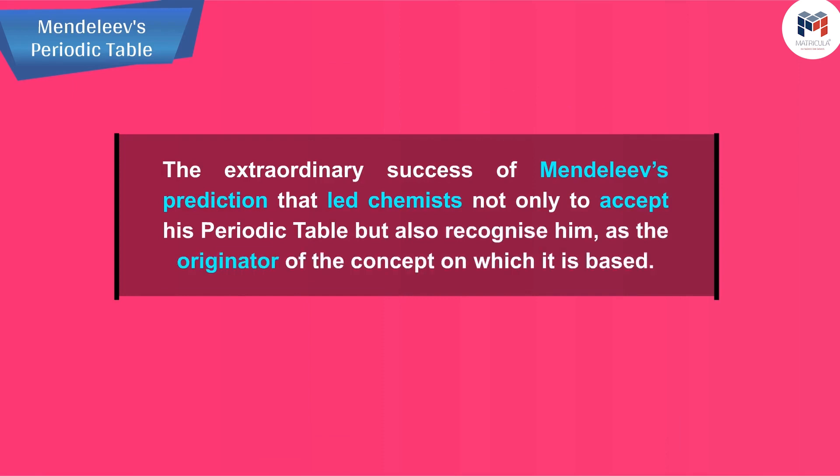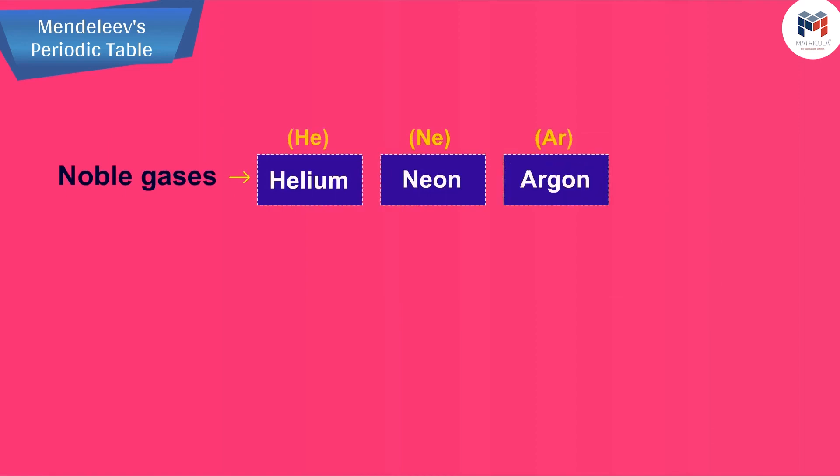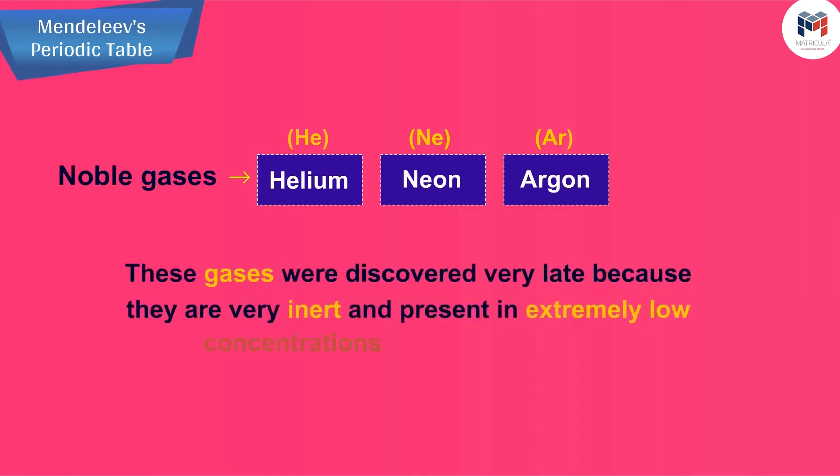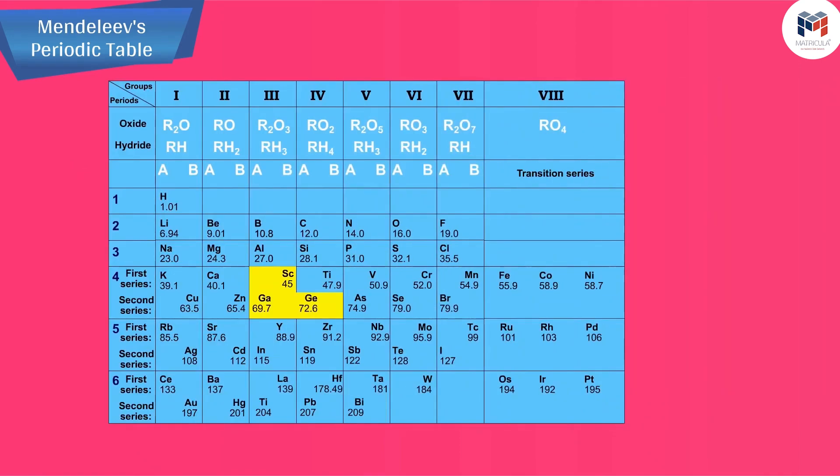Noble gases like helium, neon, and argon have been mentioned in many contexts before this. These gases were discovered very late because they are very inert and present in extremely low concentrations in our atmosphere. One of the strengths of Mendeleev's periodic table was that when these gases were discovered, they could be placed in a new group without disturbing the existing order.